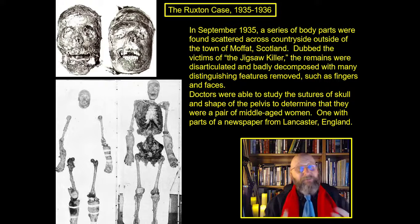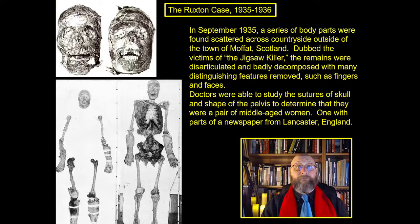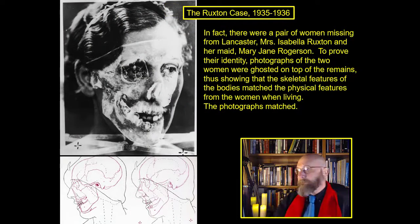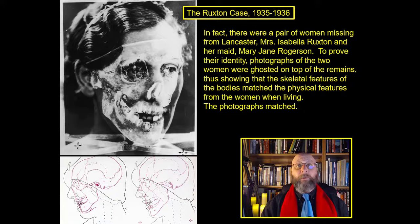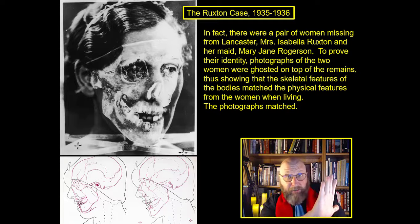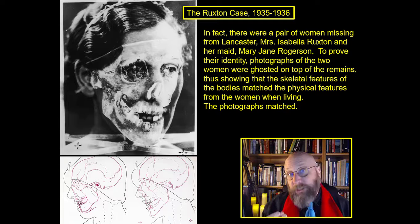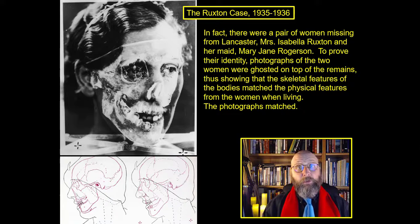The doctors were able to study and sort of configure the different parts of these individuals — the parts that could be found — and determined by looking at the pelvises and skull structure that these were a pair of middle-aged females. Wrapped around one of the body parts was a newspaper from Lancaster, England. In fact, there were a pair of women missing from Lancaster: Mrs. Isabella Ruxton and her housemaid, Mary Jane Rogerson. To prove their identity, they took photographs of the two women and ghosted images of the skulls behind those photographs. This was one of the first uses of forensic science to identify individuals and catch the jigsaw killer.